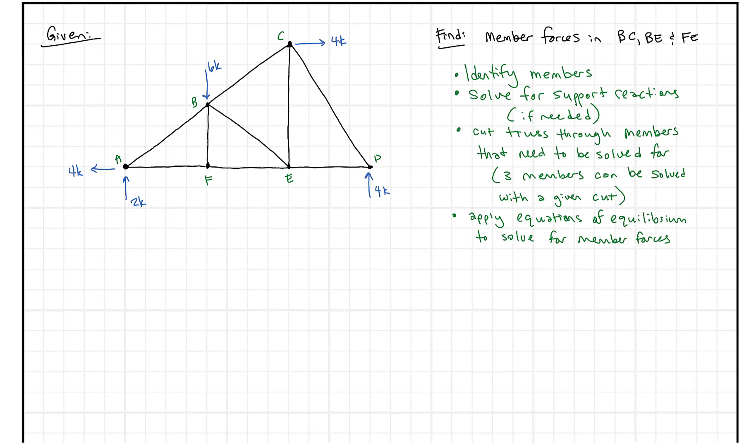For this example, we're going to solve for a truss — specifically we're going to solve for member forces BC, BE, and FE using the method of sections. In this problem, we've identified the members and we know what members we're solving for.